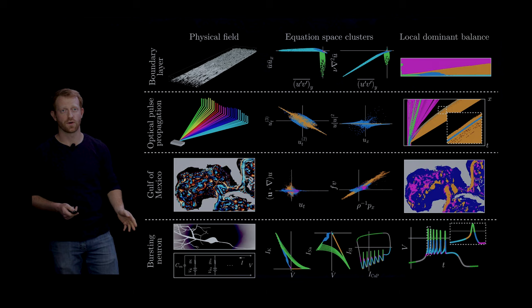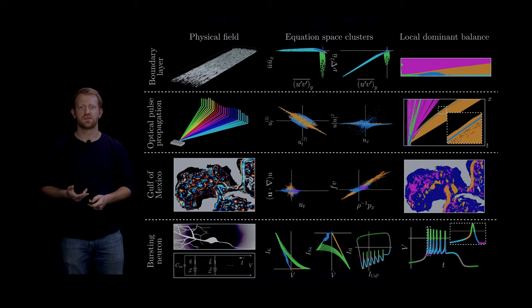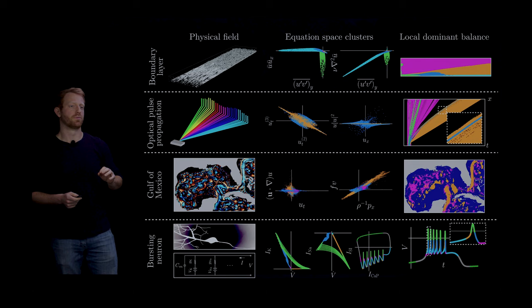Finally we look at a generalized Hodgkin-Huxley type model of an intrinsically bursting neuron. This one is a little bit different because it's an ordinary differential equation that's basically on a multi-scale limit cycle, but we are able to identify dominant balance relations that are consistent with the known biophysics of spiking neurons.